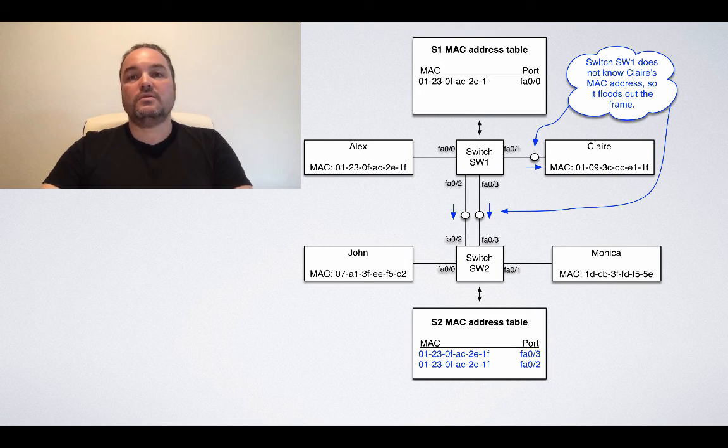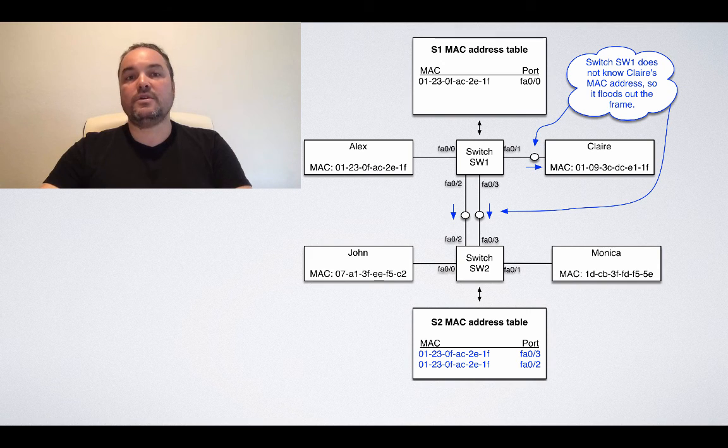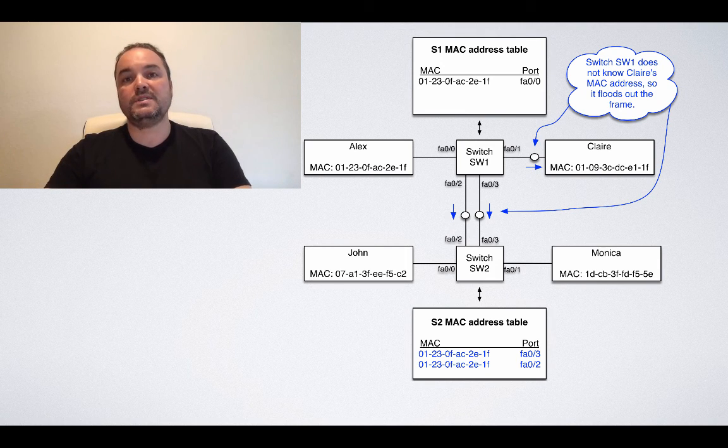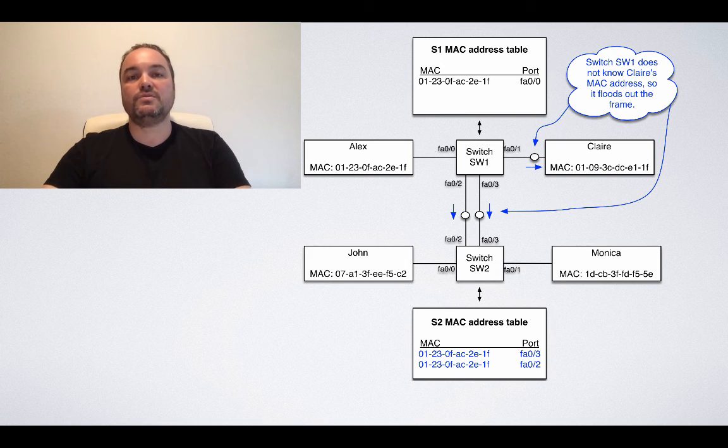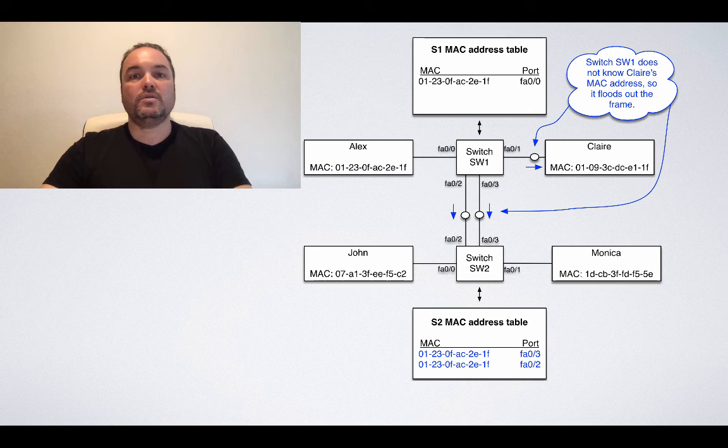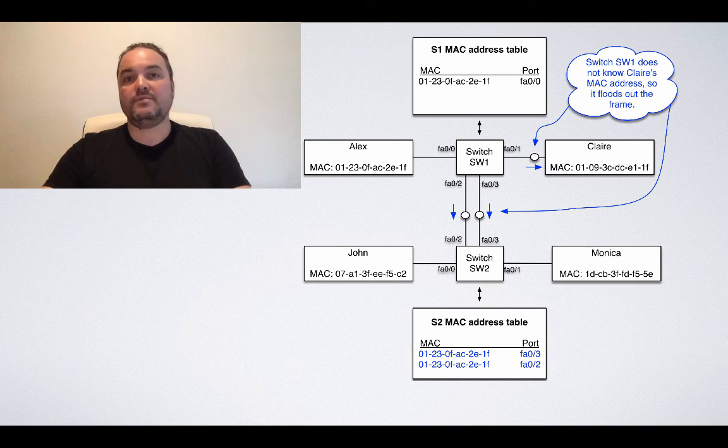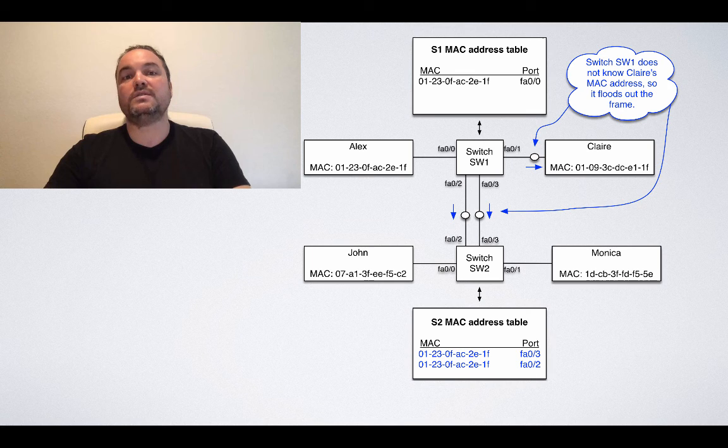Note also how SW2 saves the MAC address for Alex in its MAC address table at this point. But since Alex's frame came in on two different ports, FA02 and FA03, SW2 saves two different MAC addresses for Alex. Now, whenever John or Monica will need to send something to Alex, SW2 will have to send their frames on both ports FA02 and FA03 because that's where it knows Alex to be.